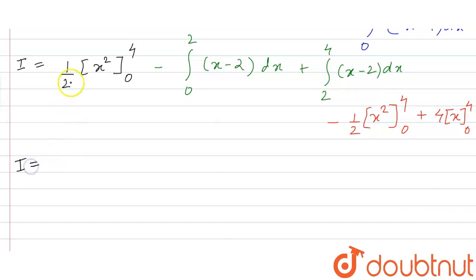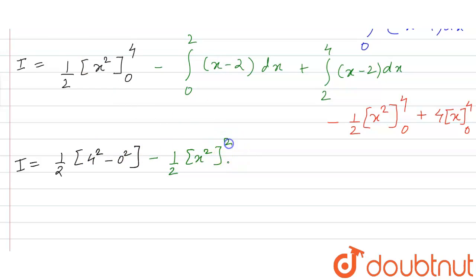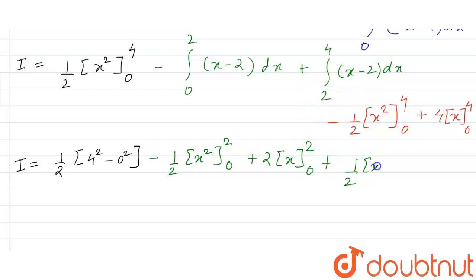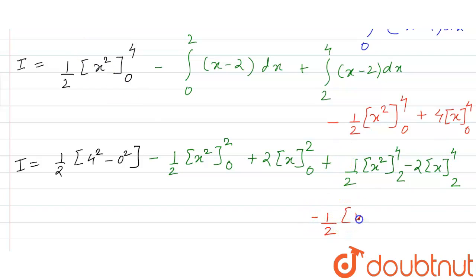The value of I will be equal to: 1/2 times (4 squared minus 0 squared), minus of 1/2 times x squared with upper limit 2 and lower limit 0, minus minus gives plus of 2 times x with upper and lower limits, plus of 1/2 x squared with upper limit 4 and lower limit 2, minus 2 times x with upper limit 4 and lower limit 2, and minus 1/2 times (4 squared minus 0 squared) plus of 4 times (4 minus 0).